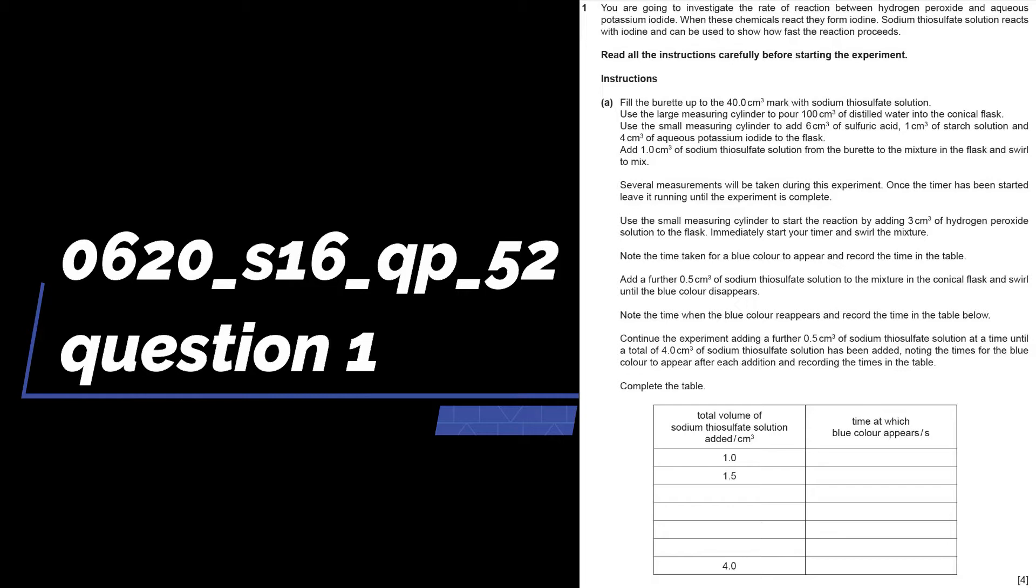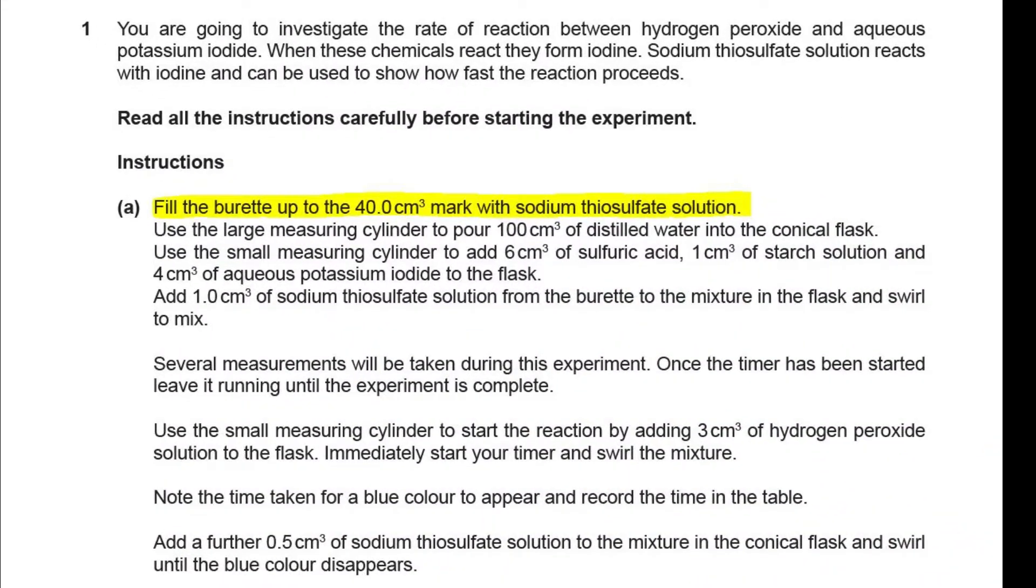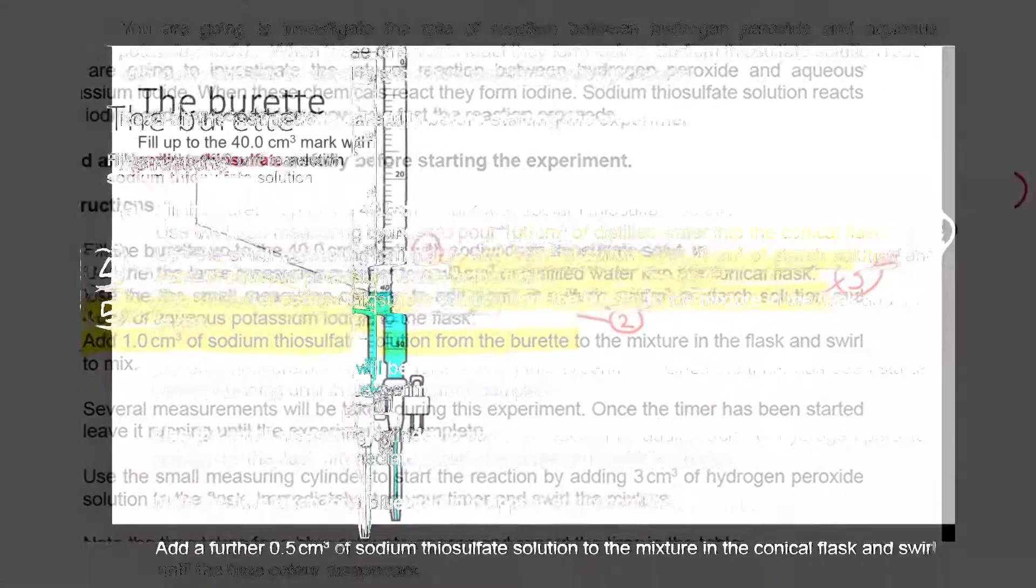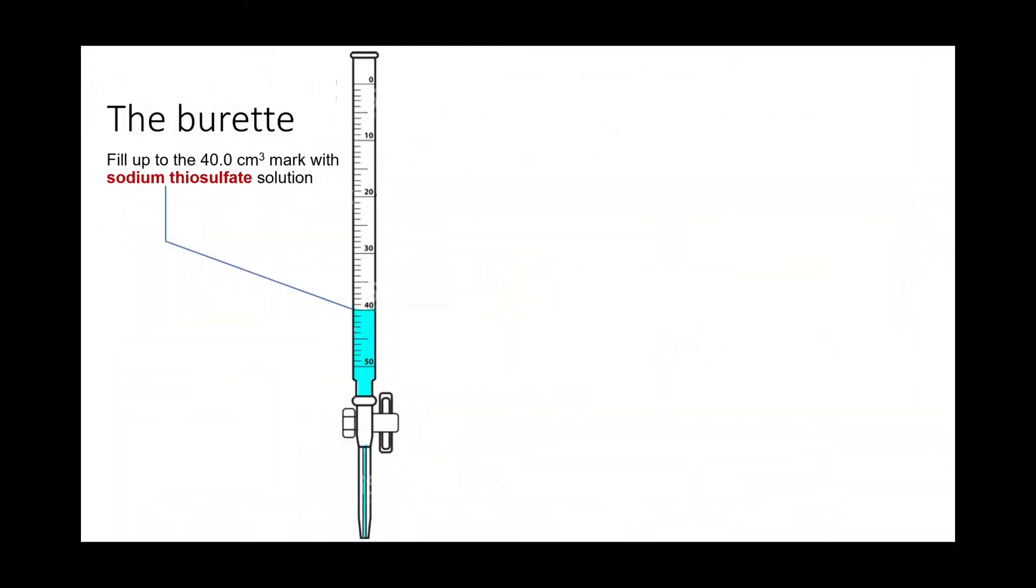This is one of the most difficult experiments in IGCSE chemistry practical papers. At first, you have to prepare your burette, and then secondly, prepare your conical flask. I'm going to first outline how it's done using diagrams, and later I'll show you the actual demonstration.